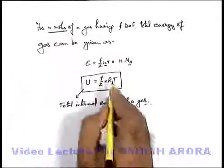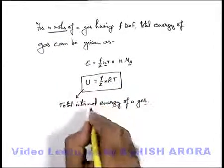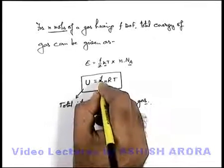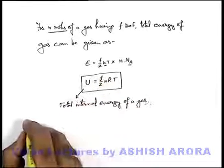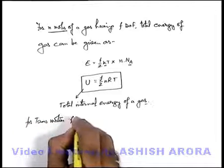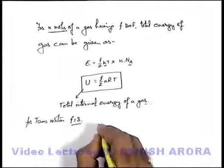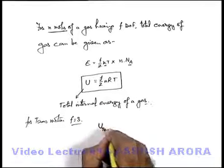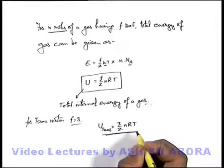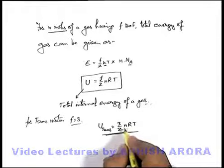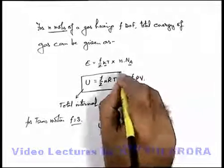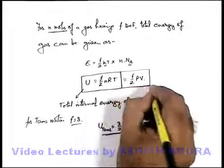This quantity f/2 nRT is specifically termed the total internal energy of a gas — or more precisely, n moles of a gas at temperature T. The total internal energy of a gas is the sum of all the kinetic energies of gas molecules, written as f/2 nRT. For translational motion, f equals 3, so the translational energy is 3/2 nRT, as we already studied. Also, nRT can be replaced by PV, so the internal energy can also be written as f/2 PV, which is useful for some numerical applications.